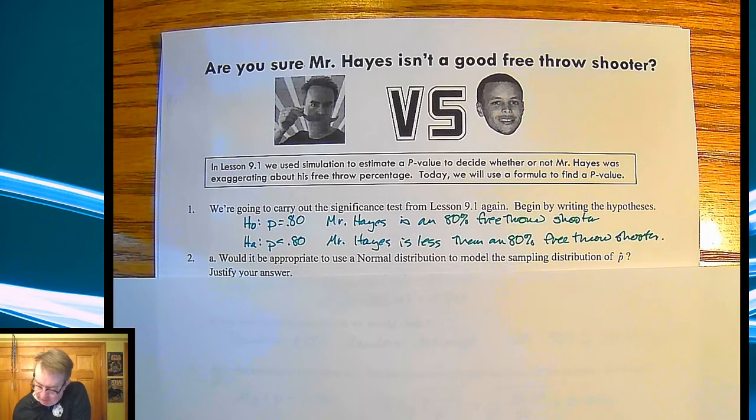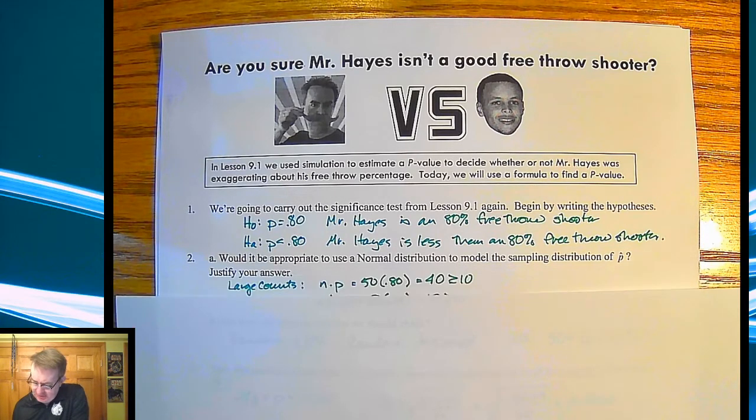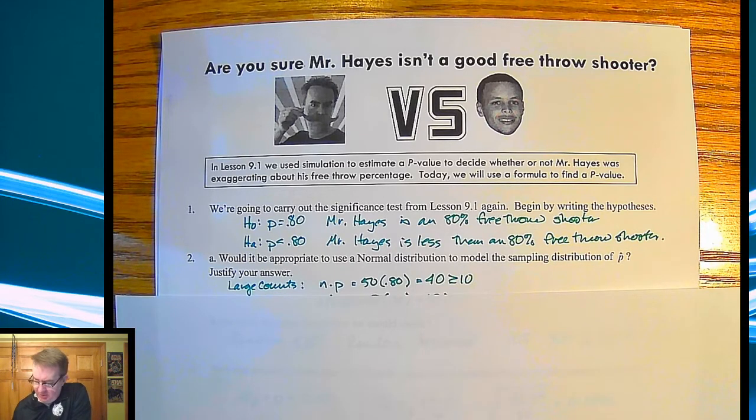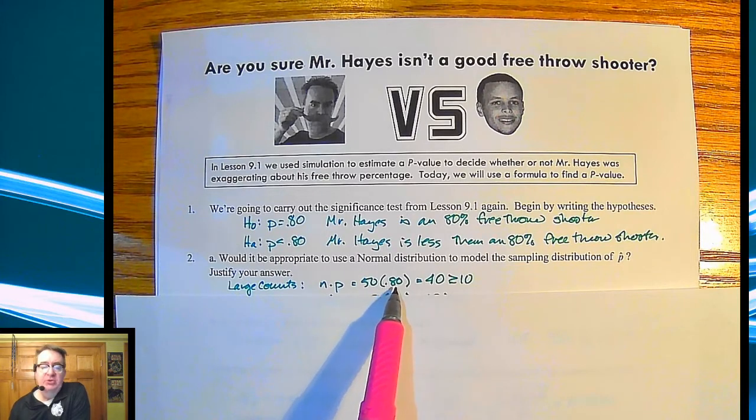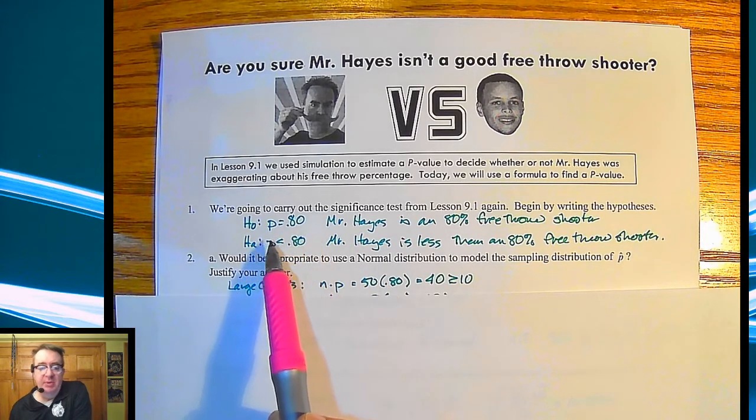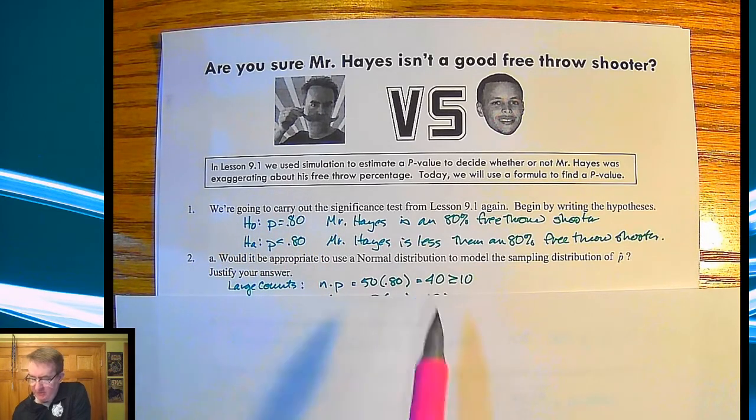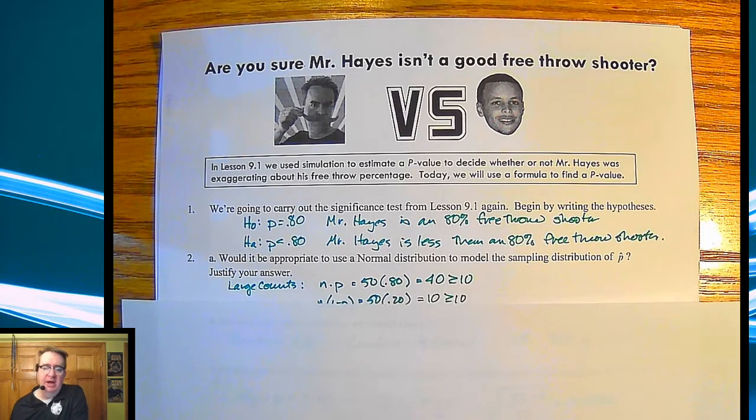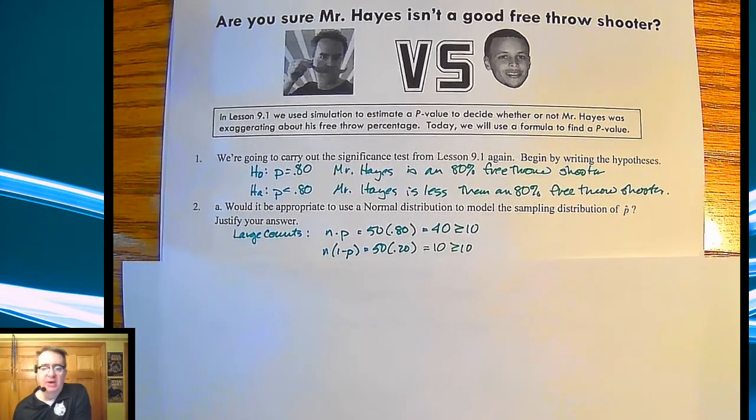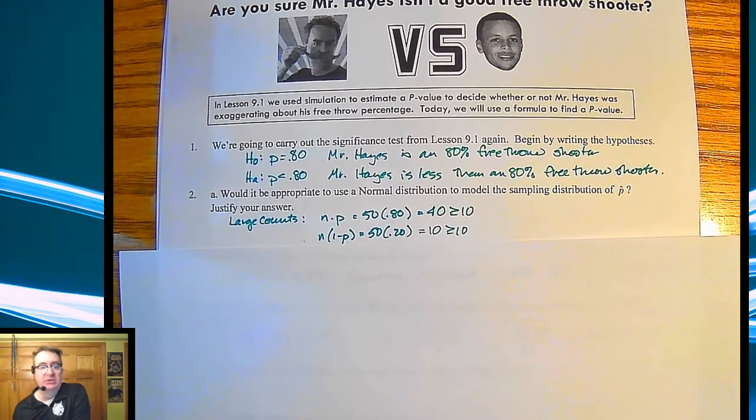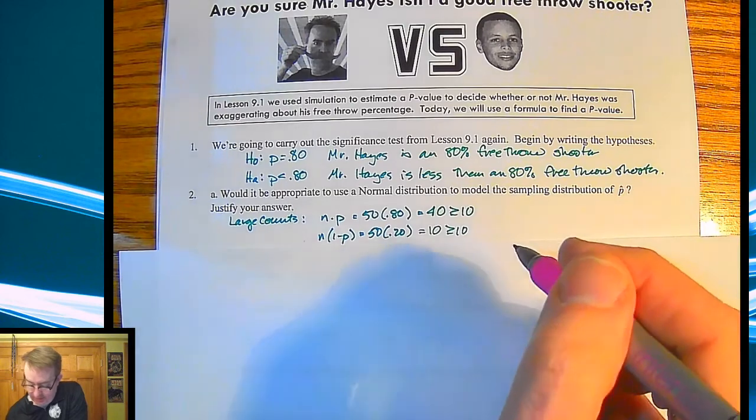Would it be appropriate to use a normal distribution for this and justify your answer? Couple of things here, and this is where we're getting to it. So remember, for normal, we use large counts. So I'm going to take n times p, and we're going to assume that I am an 80% shooter. Because remember, everything that we do, we're assuming that the null hypothesis is true. So 50 times 0.80 is 40, that's bigger than 10. And then n times 1 minus p, 50 times 0.20 is equal to 10, which is greater than or equal to 10. So we're good there.